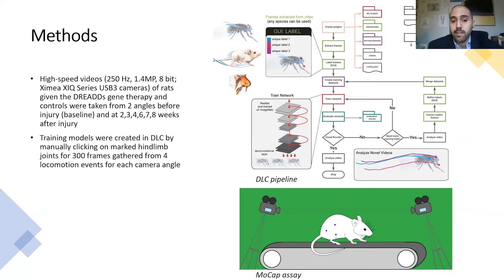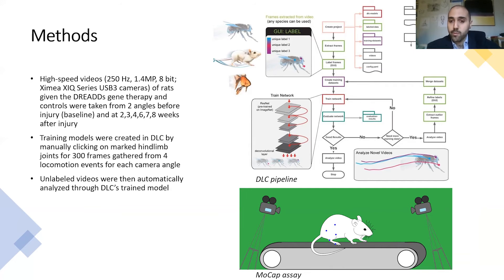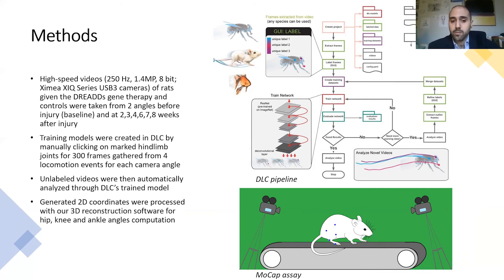Training models were created in DeepLabCut. To do that, we extracted frames manually, then we clicked on hind limb joints that we are interested in for 300 frames gathered from four different locomotion events, for a total of 1,200 frames. We did one training model for each camera angle. Then we grabbed the unlabeled videos, loaded them through the DeepLabCut pipeline, and they were automatically analyzed, generating 2D coordinates.